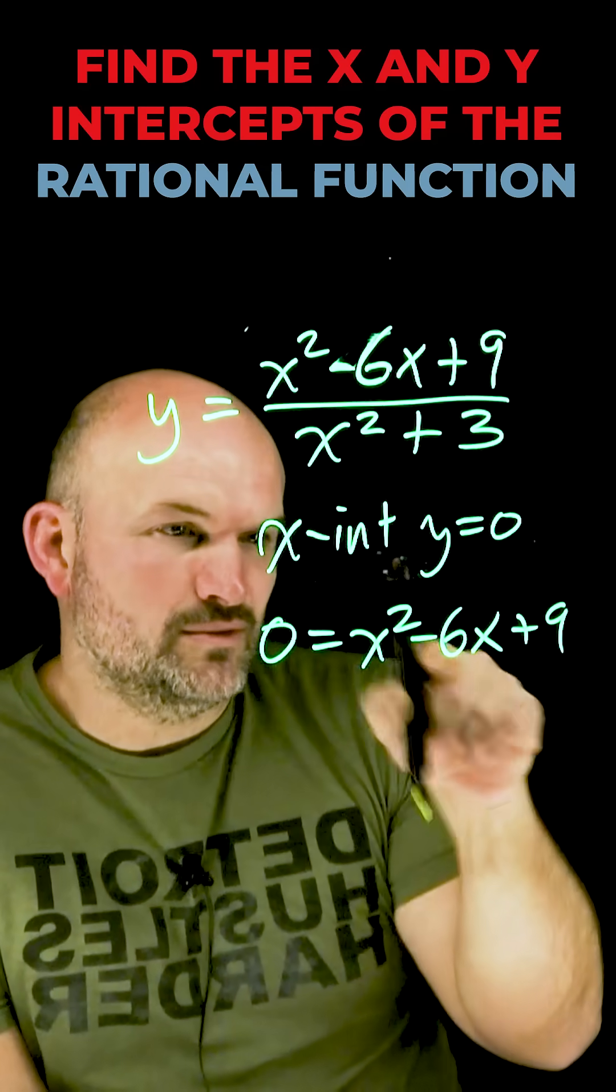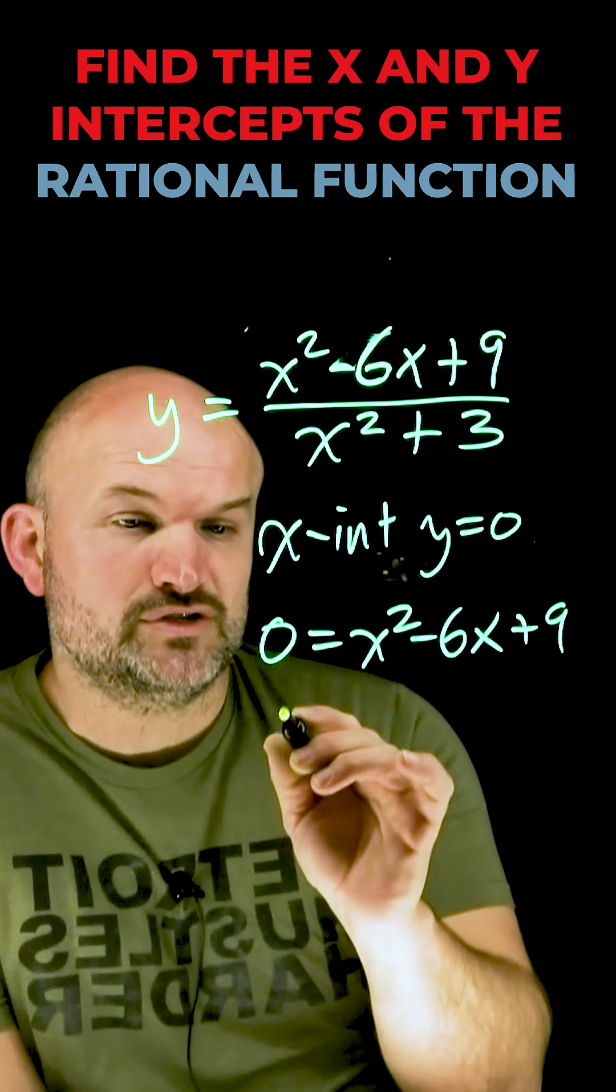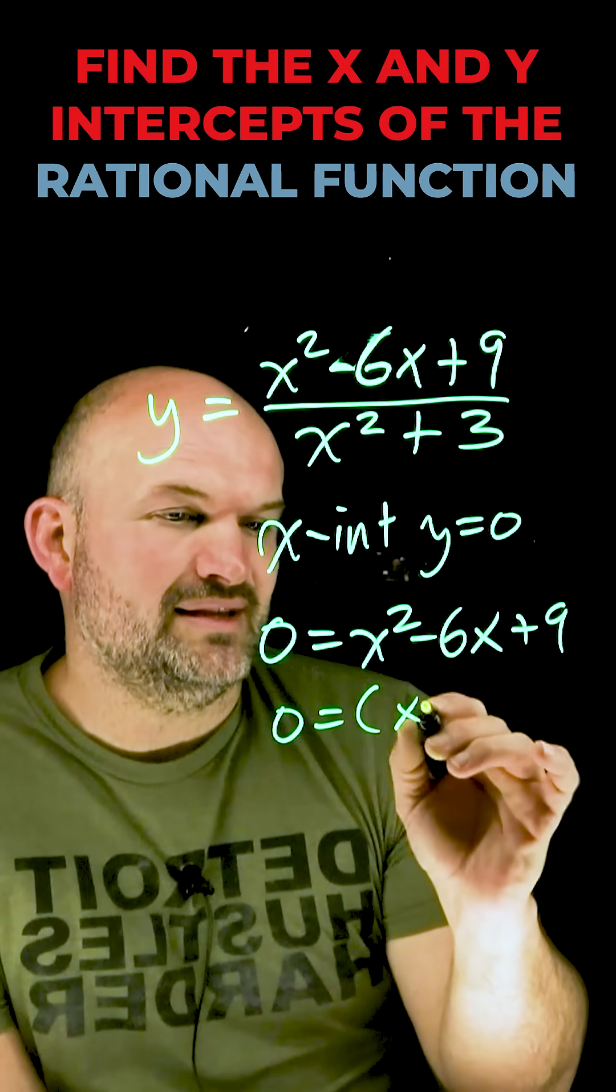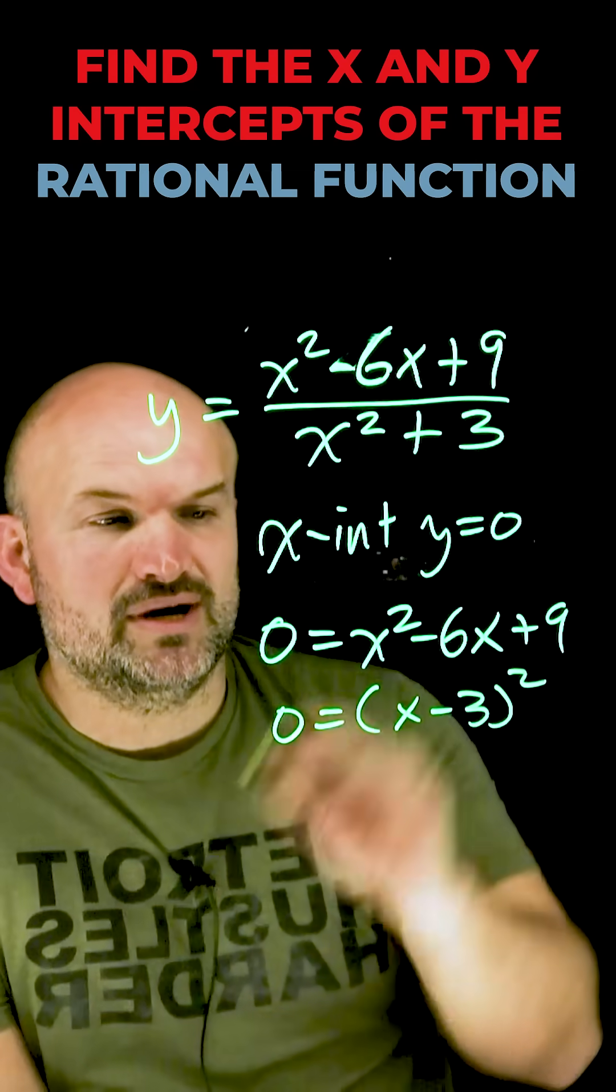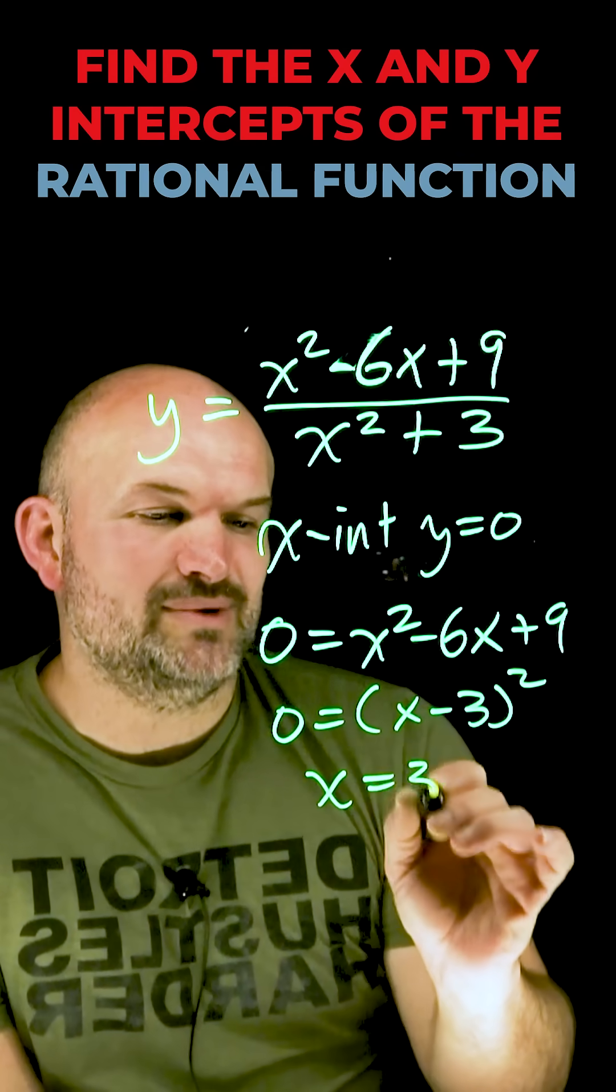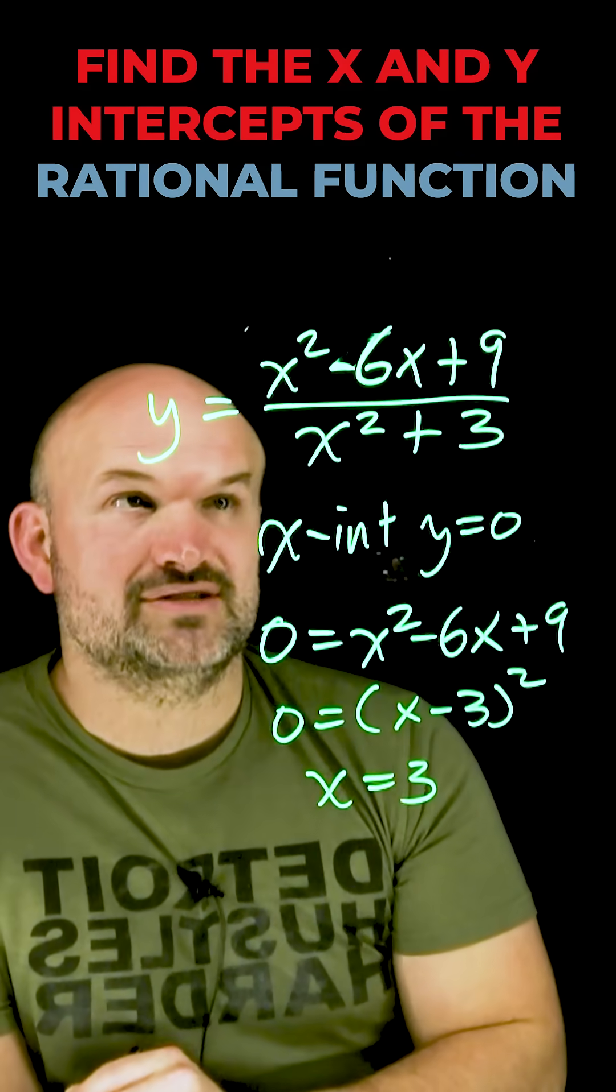Now, you need to be able to solve this. Well, this is a quadratic and also a perfect square trinomial, so therefore we can rewrite this as (x minus 3) quantity squared, take the square root of both sides, and we can see that x is going to equal 3 for the x-intercept.